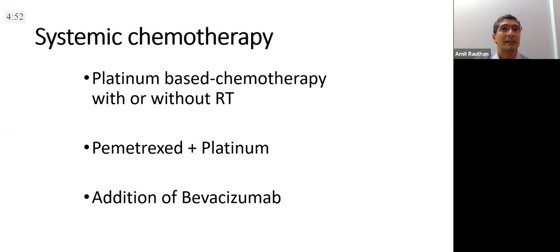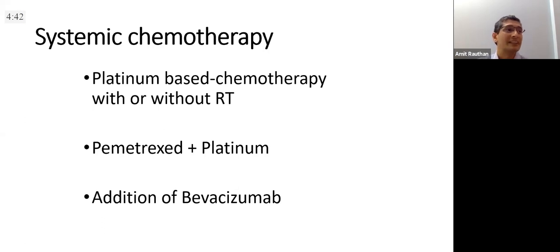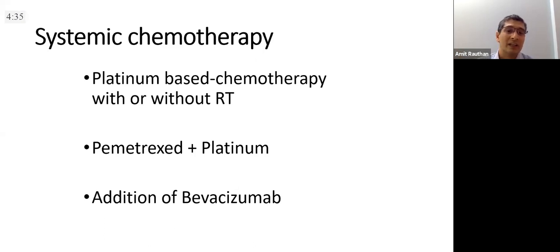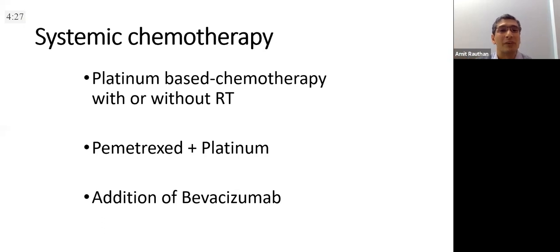Systemic chemotherapy: if patients are fit and leptomeningeal disease detected, we gave intrathecal therapy, some radiation, and offered platinum-based chemotherapy — platinum pemetrexed has been used. We know penetration of chemotherapy drugs into the leptomeninges is not very great. There is some data that adding bevacizumab helps, though the data is not very strong and all these trials have very small numbers.